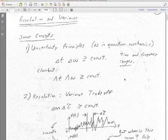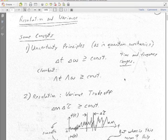Even for the very predictable parts of our data, we can only predict them so well. This gets to the topic of uncertainty principles. We're going to look at an uncertainty principle that is actually exactly the same as the Heisenberg uncertainty principle in quantum mechanics, and we're going to apply it to seismograms.